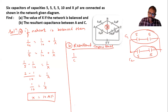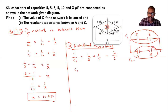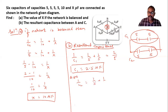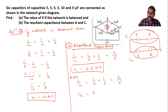For C1: 1/C1 = 1/5 + 1/5 = 2/5, so C1 = 5/2 = 2.5 microfarad. Similarly, 1/C2 = 1/5 + 1/5 = 2/5, so C2 = 5/2 = 2.5 microfarad.